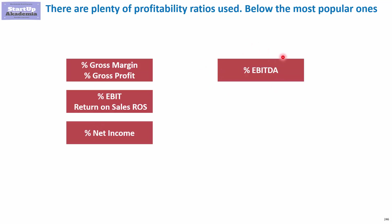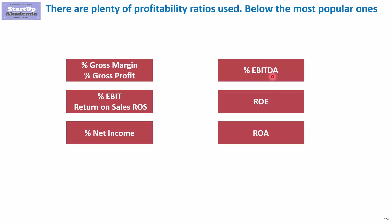Those are all ratios where we relate specific elements from the profit and loss statements to sales. However, we can also check profitability against other things, and therefore we have two important ratios called return on equity and return on assets. In return on equity we relate net income to equity, and in return on assets we relate net income to assets. This tells us how good we are in using the equity given by the shareholders, and how good we are in using the assets financed by both shareholders as well as banks.